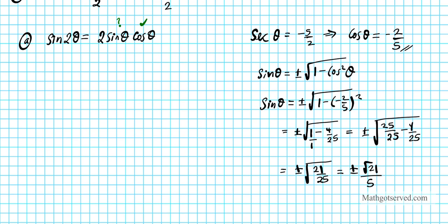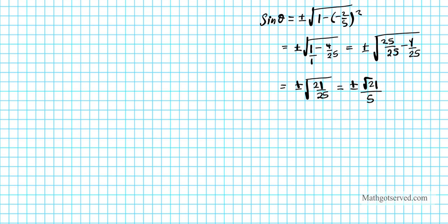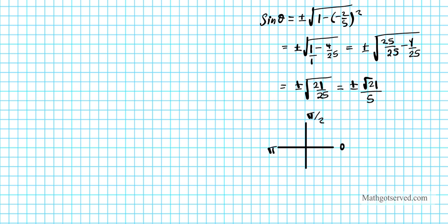To determine the accurate sign for sine, we'll make our coordinate system. We know that theta is between pi over 2 and pi, so let's indicate where that is. We have 0, pi over 2, and pi. So theta is basically between pi over 2 and pi, which is quadrant number 2.